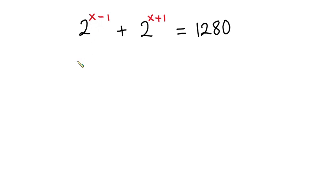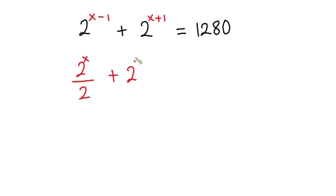2 to the power x minus 1 is the same as 2 to the power x divided by 2. Then, 2 to the power x plus 1 is the same as 2 to the power x times 2. So the equation becomes: 2^x over 2, plus 2^x times 2, equals 1280.